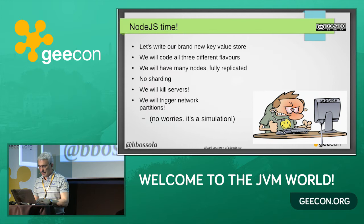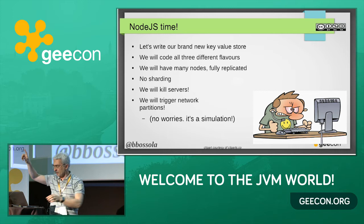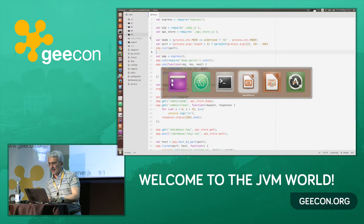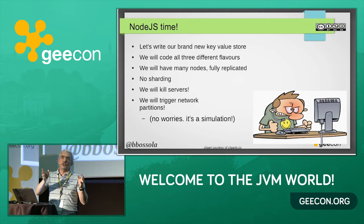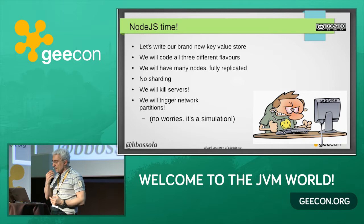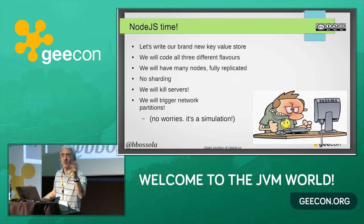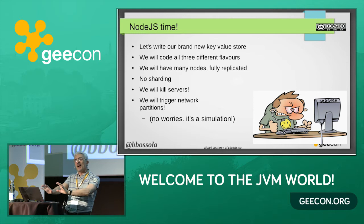Because we only have 30 minutes, let's go straight to the demos. In this demo we will see a key-value store. The data is distributed across four nodes. We're going to distribute the data on all four nodes — no sharding, fully replicated. We'll look at the code, then start killing servers, partition the network, and see what happens in these three different mechanisms. The simulation runs on my machine, completely isolated — no internet, no Wi-Fi.